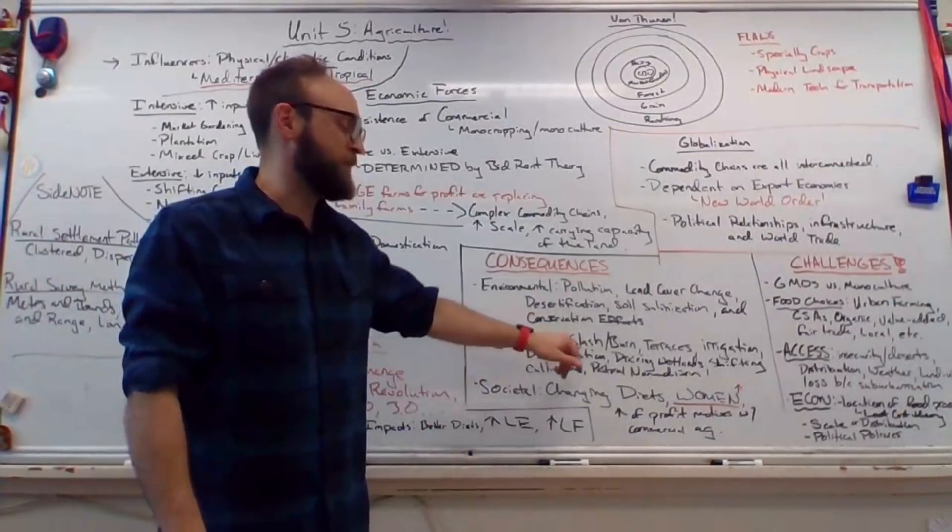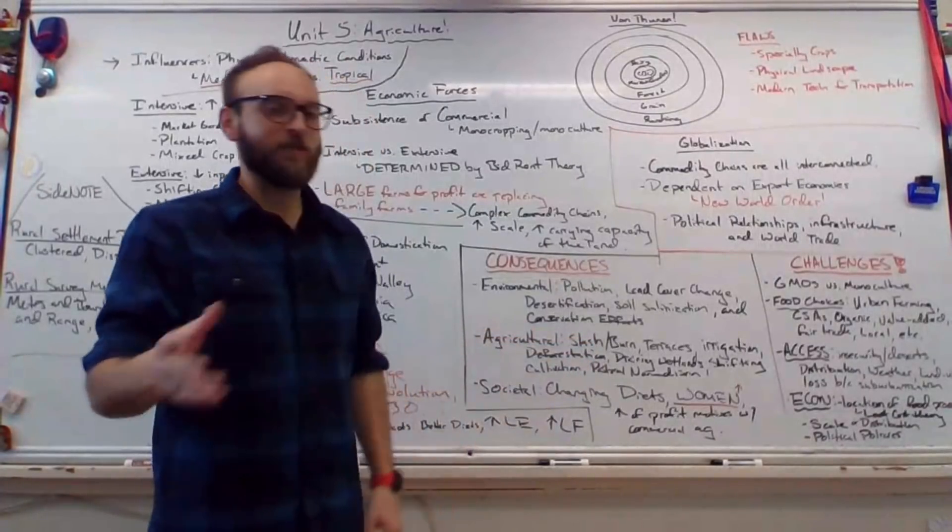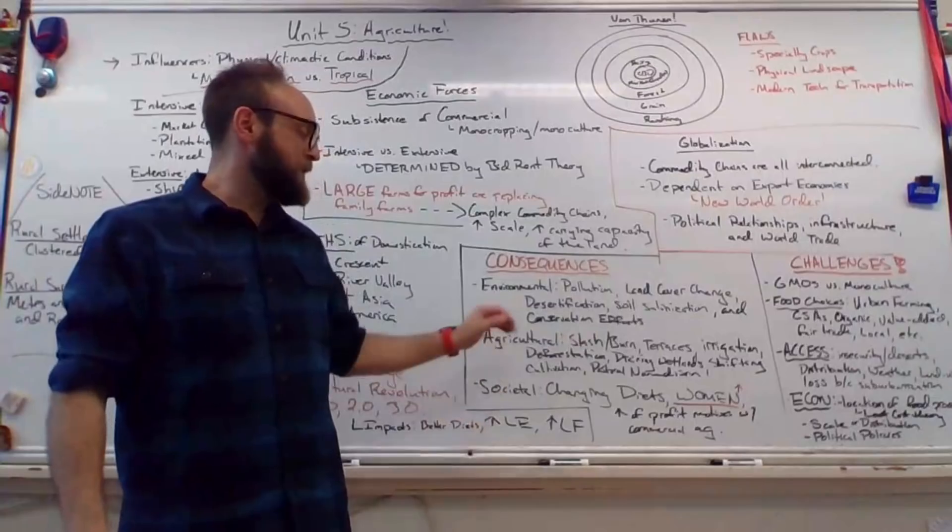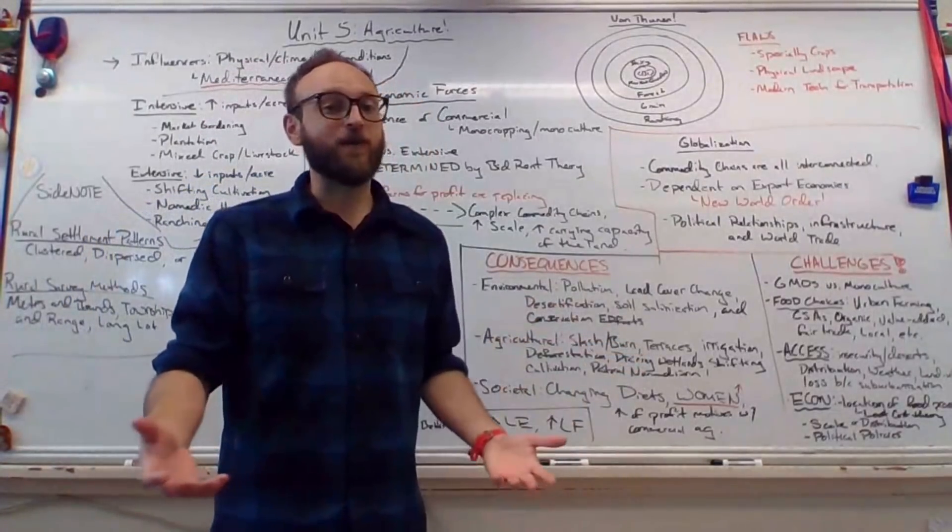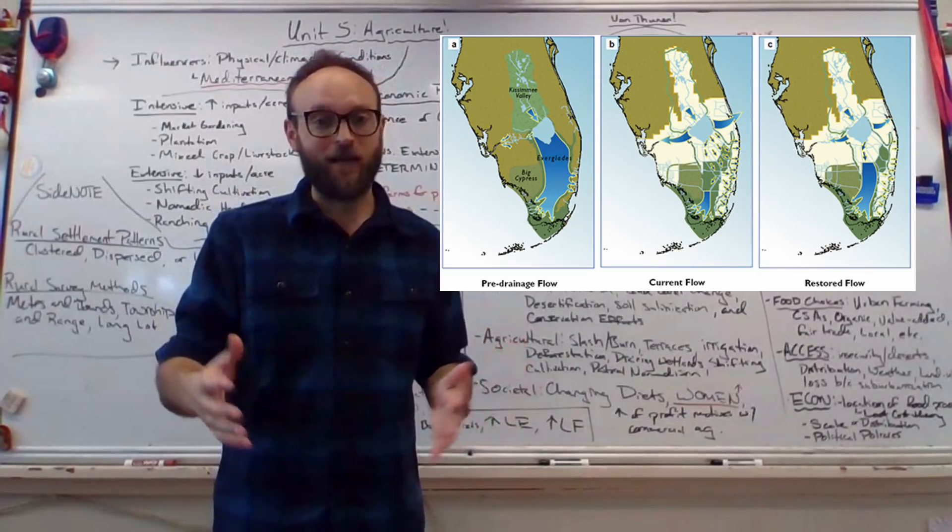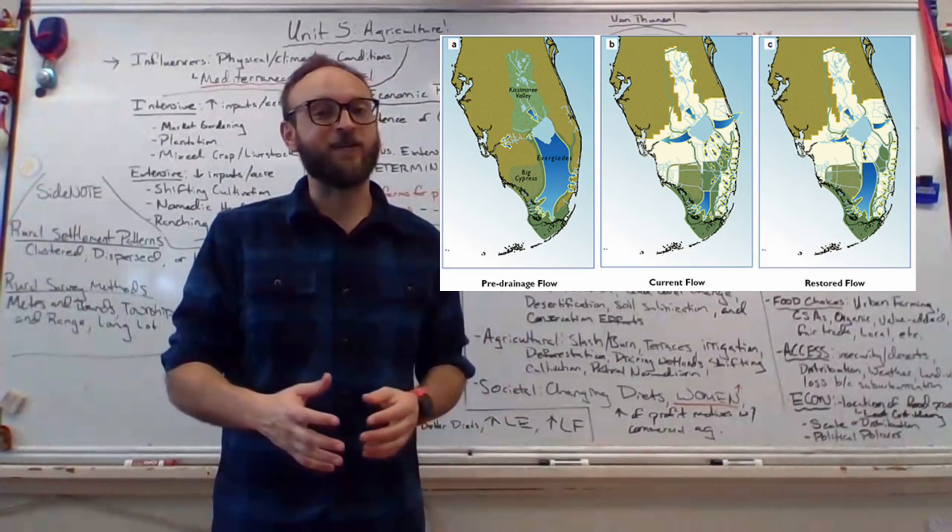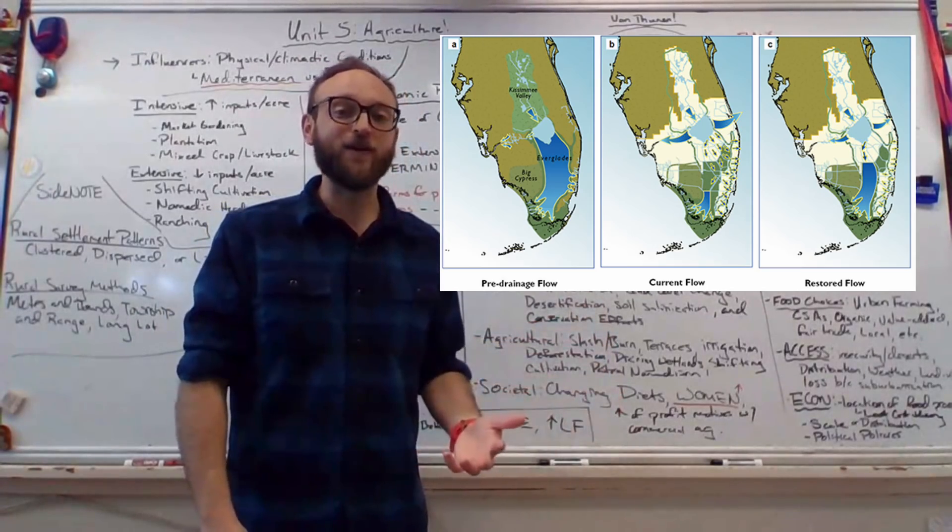Agricultural would be slash and burn. Remember, that's also called shifting cultivation. Terraces, irrigation, which is essentially just how we move water. Deforestation, cutting down trees. Draining wetlands. This is what Florida is so famous for. And we try to do this in South Florida for a very long time. A period of about 50, 60 years. And nowhere on earth has draining wetlands really effectively produced better agriculture.